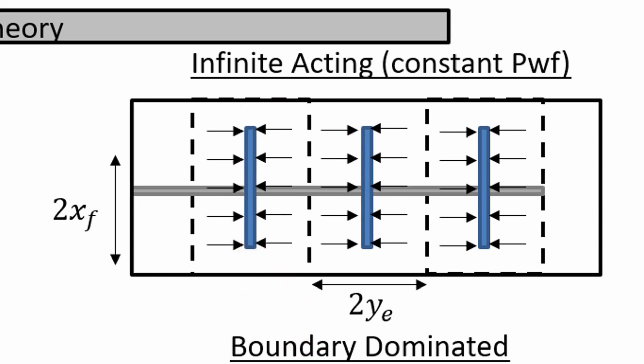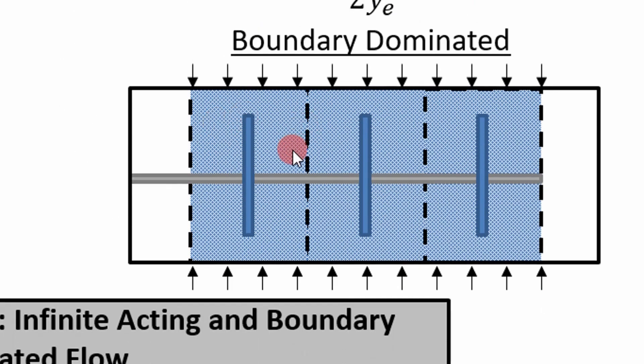And then after we produce for a while, the flow here, you're going to start to see fracture interference. So as the drainage area extends outward, we're going to get to a point where these fractures interfere. And then we enter the boundary dominated flow regime. Now if you read any text or any journals, there's several flow regimes that they consider in fractured wells. We're just looking at linear flow and boundary dominated.